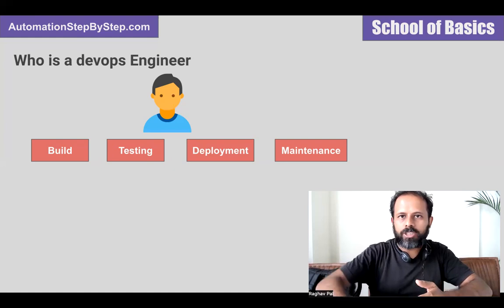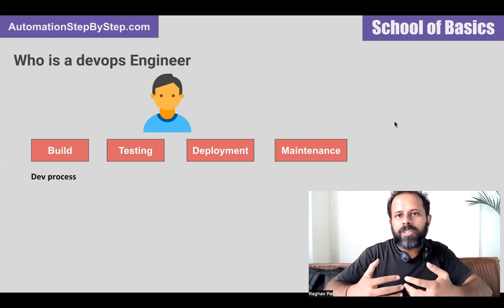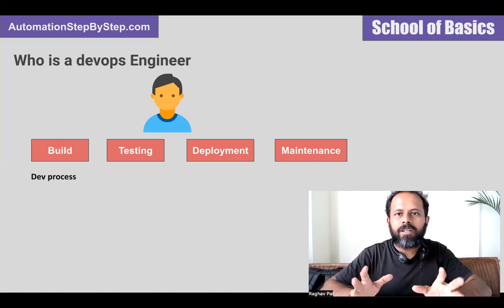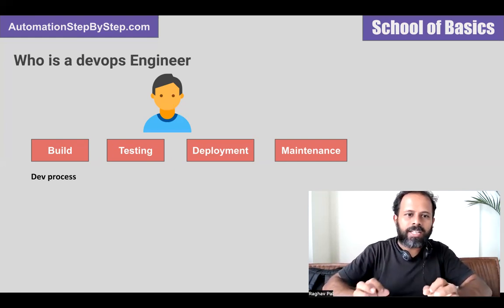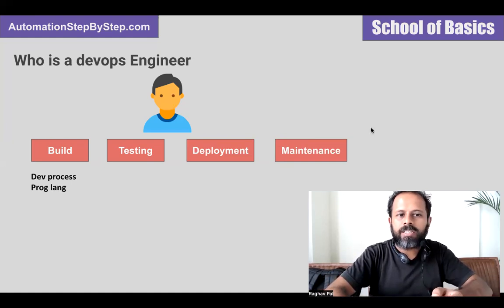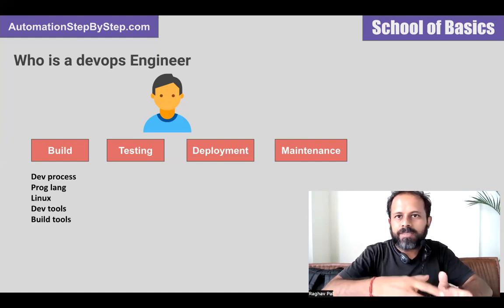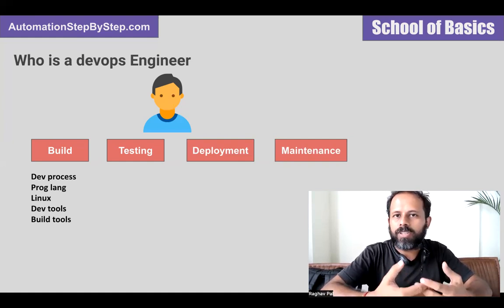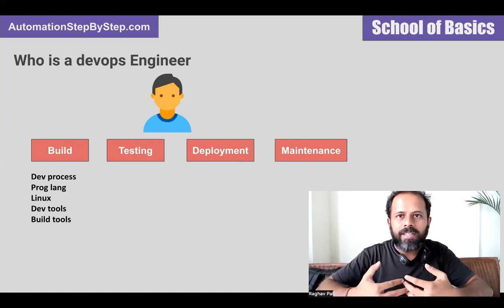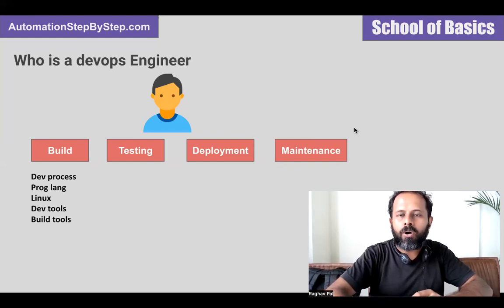Starting with the build stage — a DevOps engineer will have knowledge about the dev process being followed in the project: what is the programming language used, he will have knowledge of that programming language. In case Linux is being used, he will have the basic fundamental knowledge of the Linux operating system and its commands. He will understand and know the scripting language, and any bash execution scripts being used. He will know all the dev tools, including build tools like Maven and Gradle.